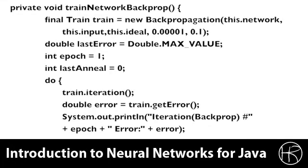Now let's see how the hybrid training was actually implemented. Here you see the train back propagation function that is called. This function begins a normal back propagation training loop. We set the last error so that we can register how much error has improved, and we set the epoch number to 1. The last time that we've annealed is 0 because we've never annealed before. We want to keep track of how recently we've annealed because we don't want to continually invoke it. We then enter the do loop and begin iterating over the back propagation algorithm.